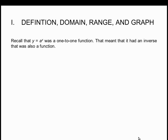Recall that y = a to the x was a one-to-one function, which meant that it had an inverse that was also a function. We now look at the inverse of y = a to the x — a function that is going to undo the exponential functions.